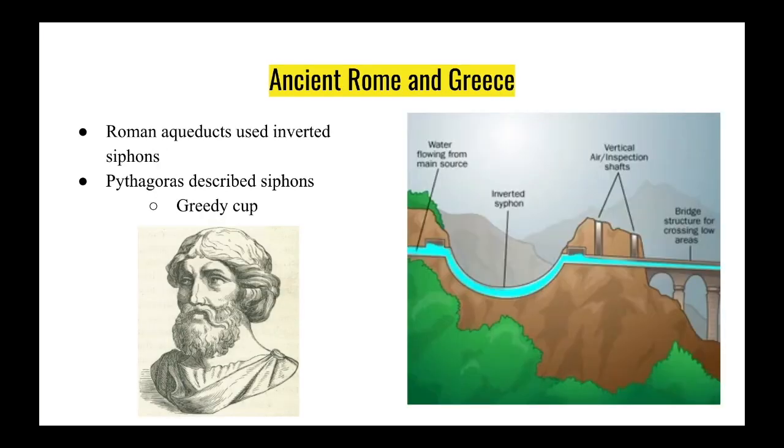In ancient Rome, they used aqueducts with inverted siphons to get water from the main source all the way to their city at whatever elevation.